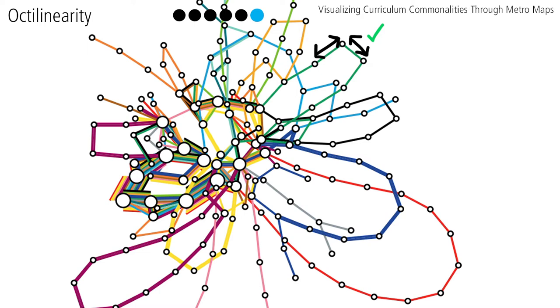Octolinearity. Line segments, for the most part, should be oriented horizontally, vertically, or diagonally at a 45 degree angle in order to imitate the primarily 90 and 45 degree angles in a traditional metro map.